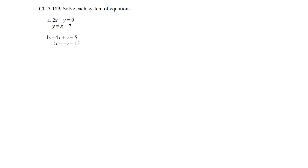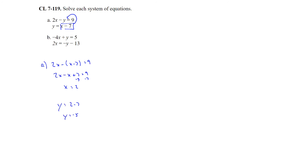Question 119: Solve each system of equations. Part A uses substitution. Substituting the second equation into the first: 2x minus (x minus 7) equals x plus 7. Combining like terms and subtracting 7 gives x equals 2. Plugging back in: y equals 2 minus 7 equals negative 5. The solution is the ordered pair (2, negative 5).